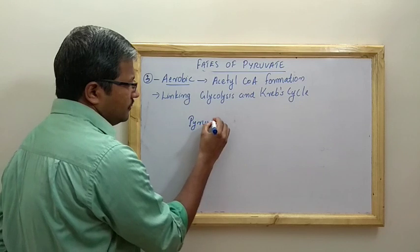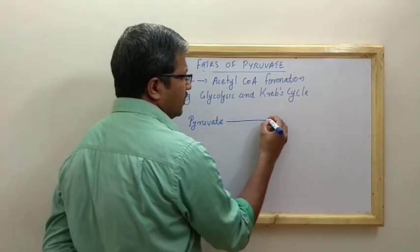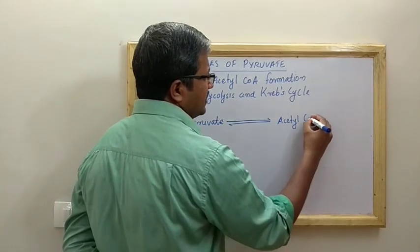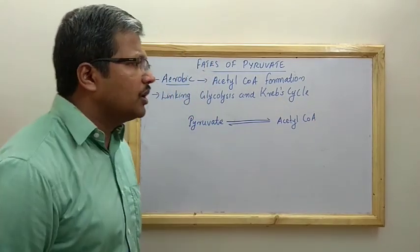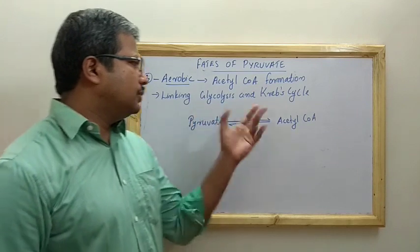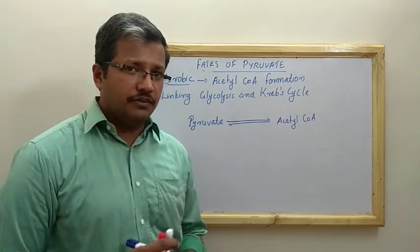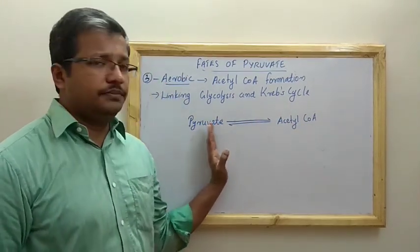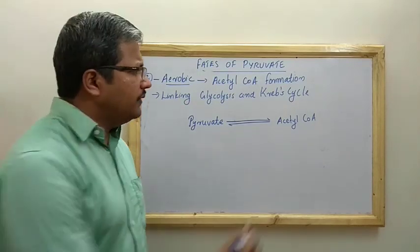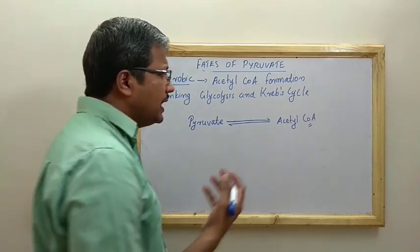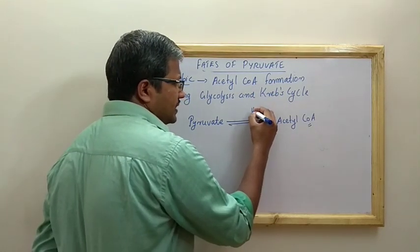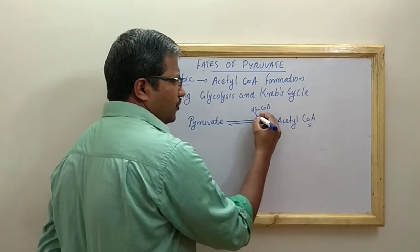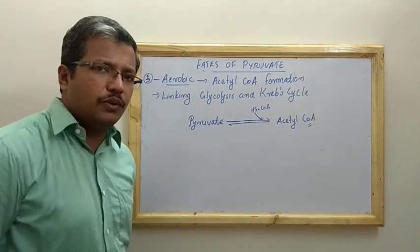Pyruvate undergoes a reaction to form acetyl-coenzyme A. What is extra in acetyl-CoA compared to pyruvate? Coenzyme A is added. The donor is HS-CoA. The HS represents the sulfhydryl group, which is the reactive group in coenzyme A — that is why coenzyme A is written as HS-CoA. The 'Co A' is simply the name; it is a large molecule and the reactive part is the sulfhydryl (–SH) group.